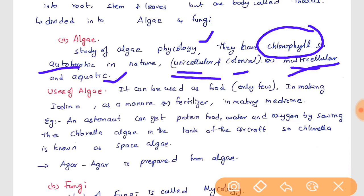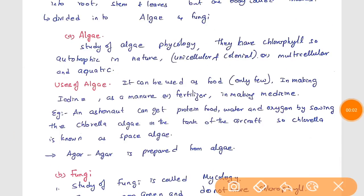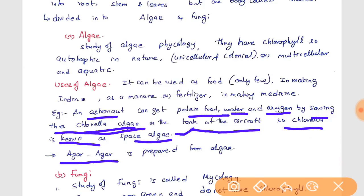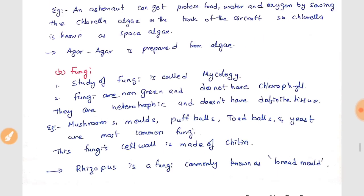Algae can be unicellular and multicellular but always have chlorophyll and are aquatic. Chlorella is one type of algae used in space aircraft — astronauts can get protein, food, water, and oxygen from chlorella grown in tanks on the aircraft, so chlorella is known as space algae. Agar is also prepared from algae.